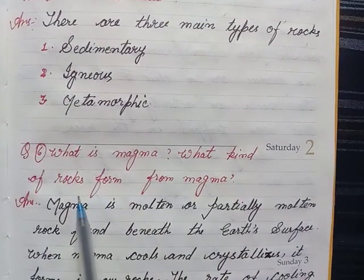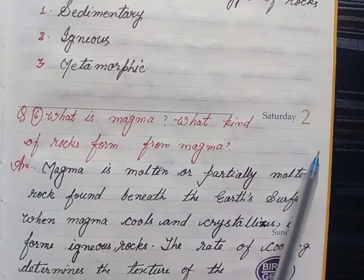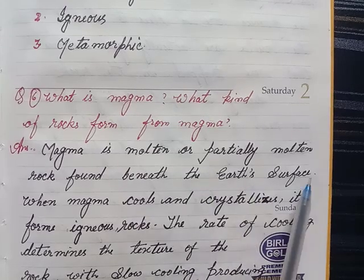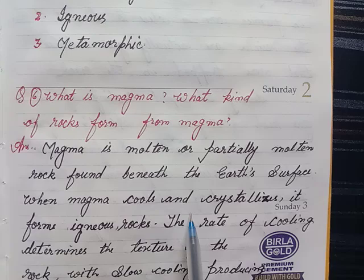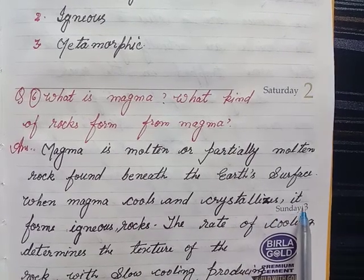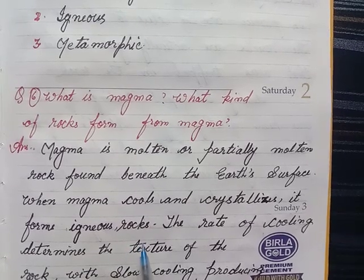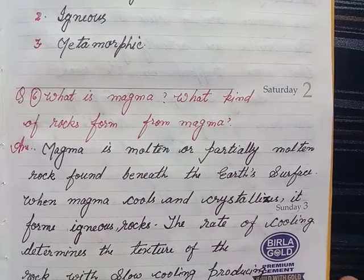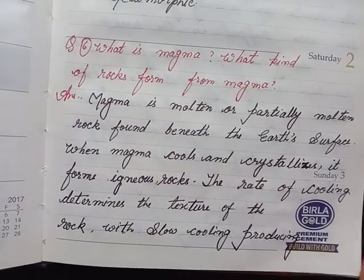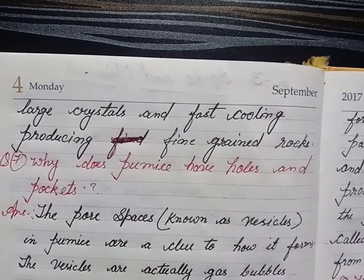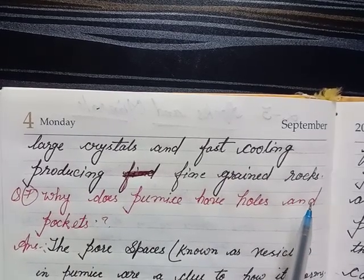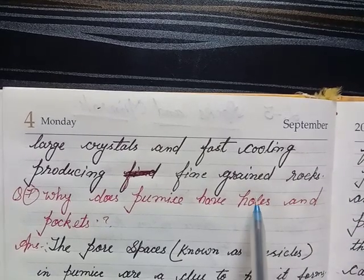Sixth question: what is magma, and what kind of rocks form from magma? Answer: magma is molten or partially molten rock formed beneath the earth's surface. When magma cools and crystallizes, it forms igneous rocks. The rate of cooling determines the texture of the rocks, with slow cooling producing large crystals and fast cooling producing fine-grained rocks.